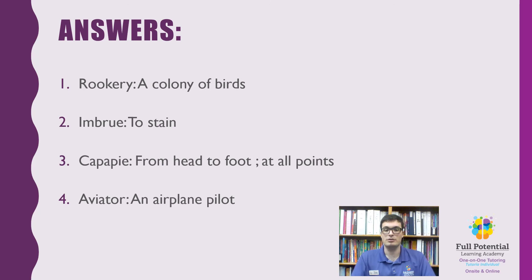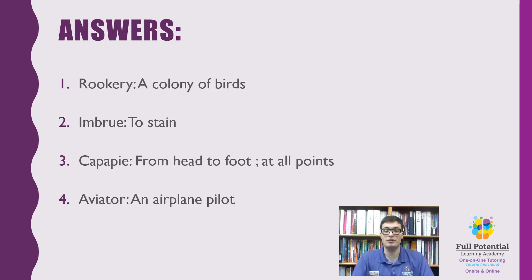Here are the definitions to the words from before. A rookery can be defined as a colony of birds. Embrue means to stain — it could refer to something or someone. Cap-a-pie means from head to toe, at all points. And finally, aviator is an airplane pilot. Don't worry if you got the wrong definitions or got one that was close but slightly different. The purpose of using dictionaries is to find the correct definitions of the words you need to use. Just make sure you choose the word that is appropriate for the context of the sentence.